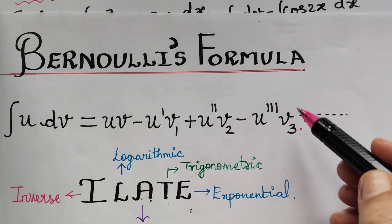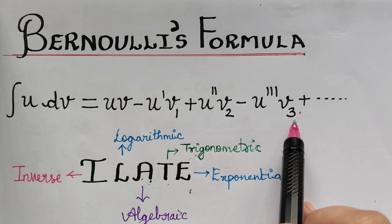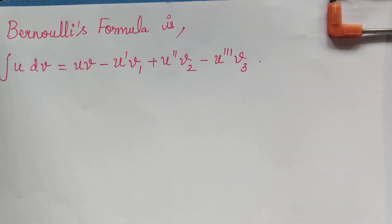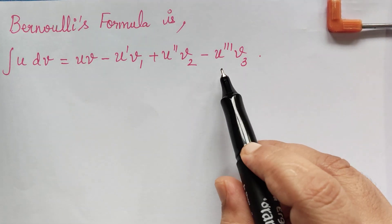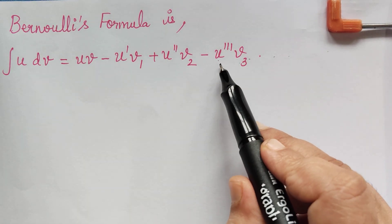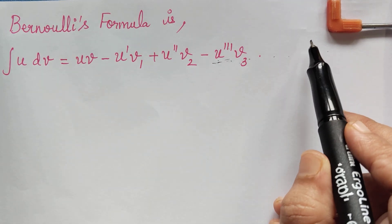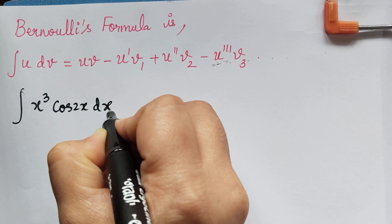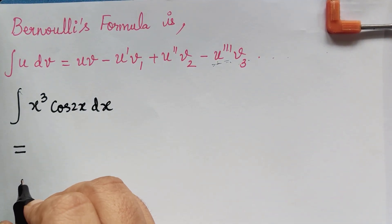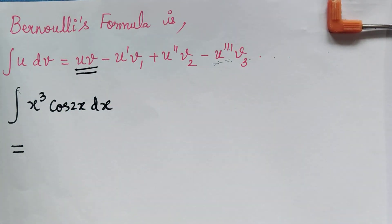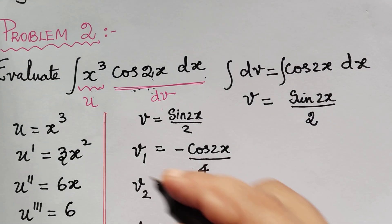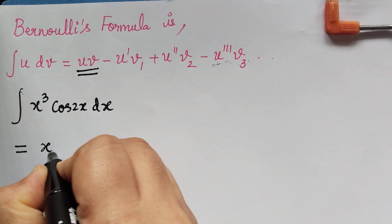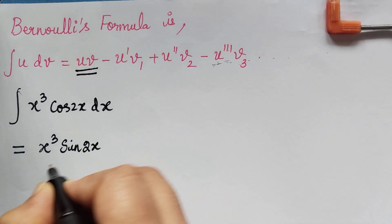We now write Bernoulli's formula. We stop at u triple dash times v3 because we have no terms beyond that. The question is to evaluate the integral of x cube cos 2x dx. Substituting into the formula: the first term is u times v, which is x cube times sine 2x divided by 2, giving x cube sine 2x divided by 2.